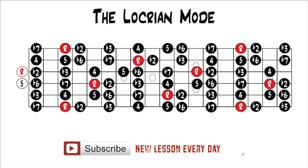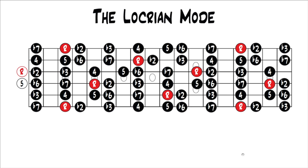Locrian is the least useful and least common of the modes. In popular music, you're almost never going to run across it. You'll run across it a lot in jazz, but even in jazz, a lot of times they'll use a different mode over the chords you get from the Locrian mode. It is useful to understand, and it is still used in more advanced music, so don't just think there's no reason to look into it.